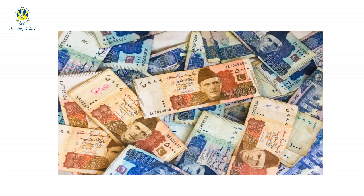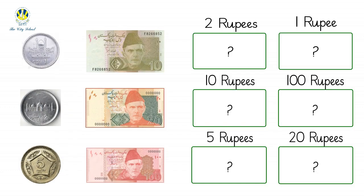All right, kindergarteners — now it's quiz time! Are you all ready? Here you see different amounts of money, that is notes and coins. And on this side, you see different values of money. What you have to do is recognize and match the amount of money with its value. Let's begin!